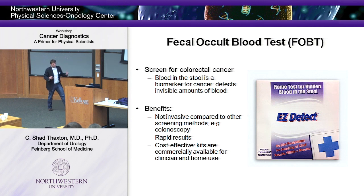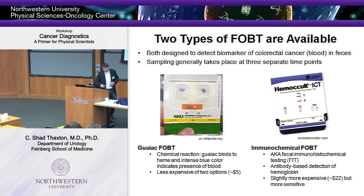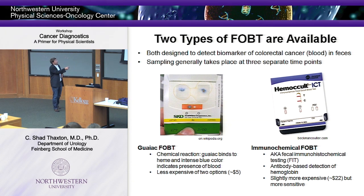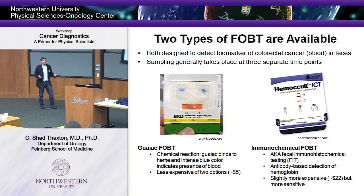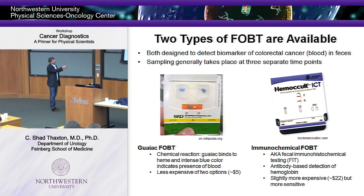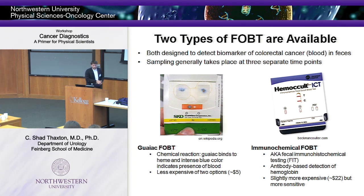Fecal occult blood tests come in two different flavors. You take a sample of stool, smear it into the window of these tests, add a developer containing a GUIAC reagent, and if blood is present, the test turns blue. It's a very simple biomarker — blood in the stool — to predict whether an individual has colon cancer. These tests are very cheap and easy ways to screen for colon cancer.